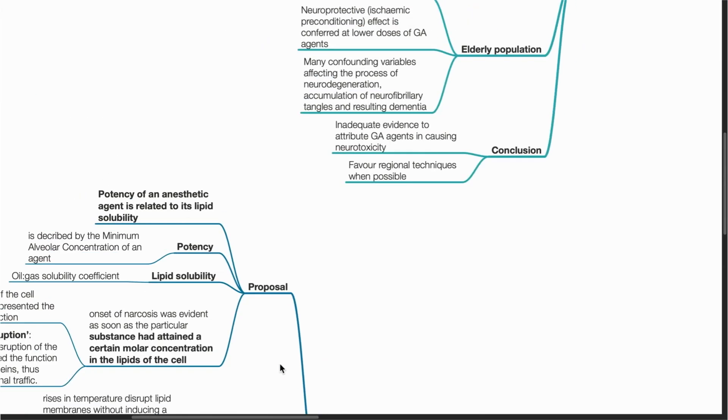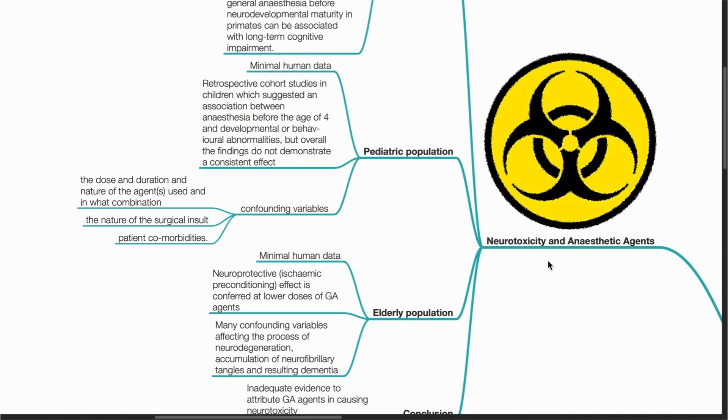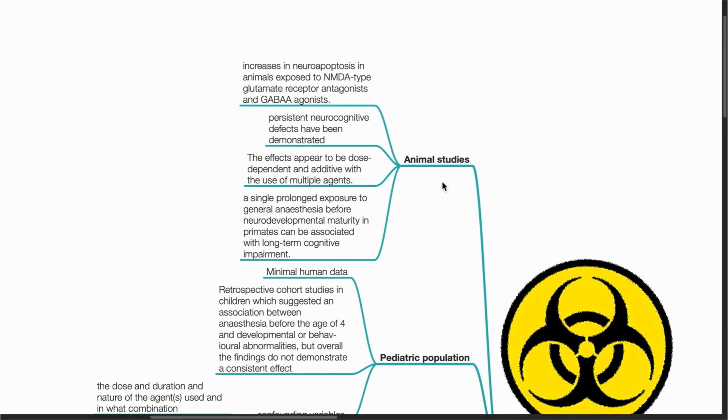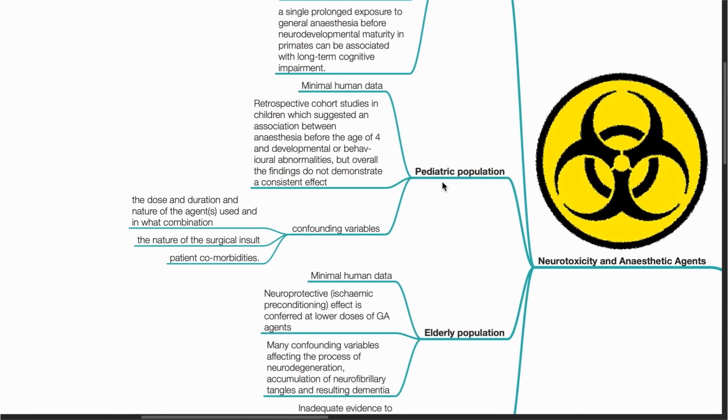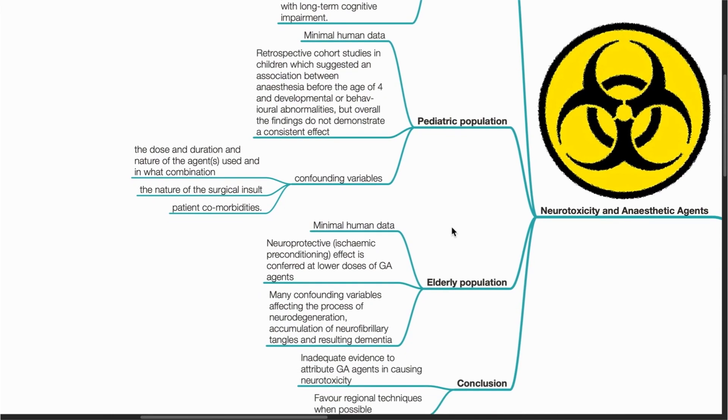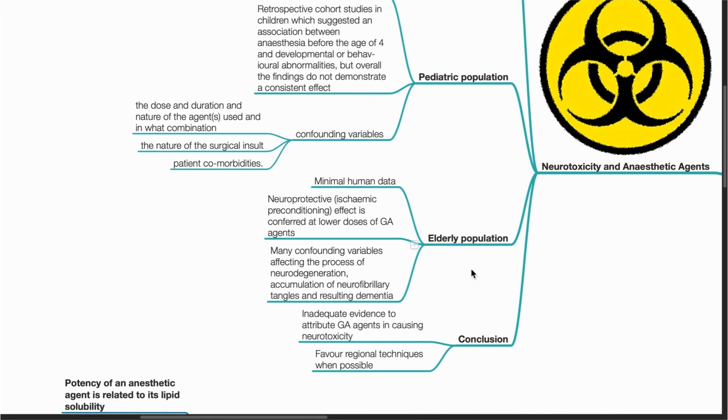With regards to neurotoxicity and anaesthetic agents, although some animal studies do show evidence that anaesthetic agents can cause neurotoxicity in animals, there is insufficient evidence in human studies showing that there is neurotoxicity associated. The conclusion is that there is insufficient evidence to attribute GA agents in causing neurotoxicity.